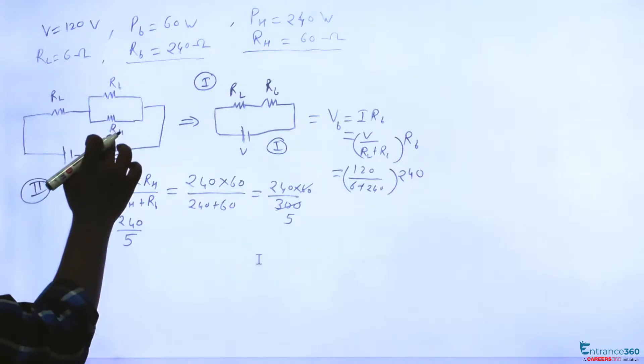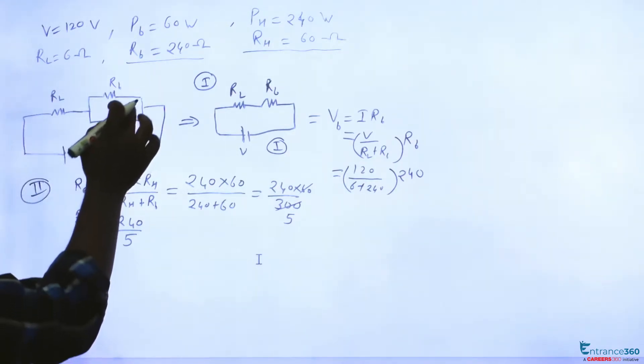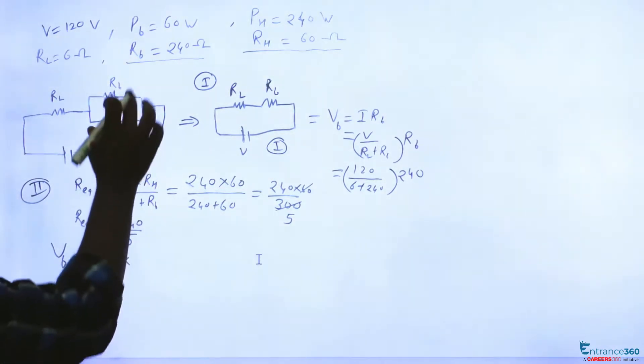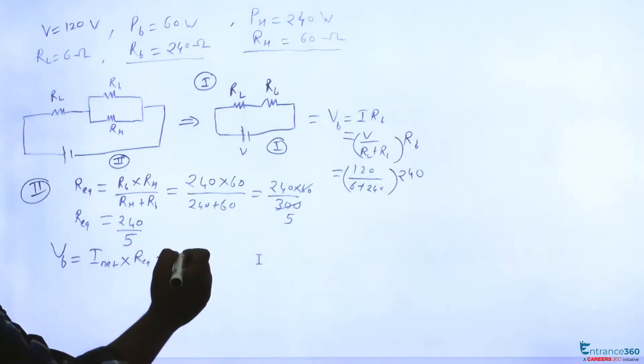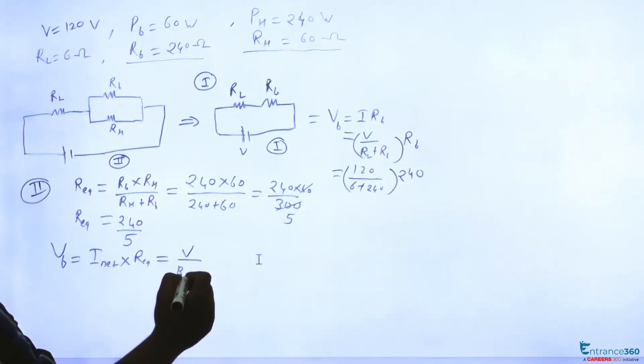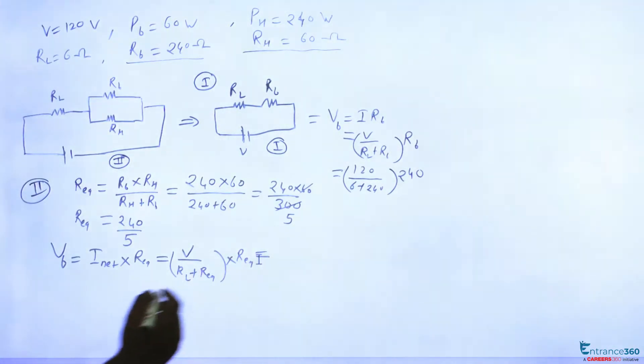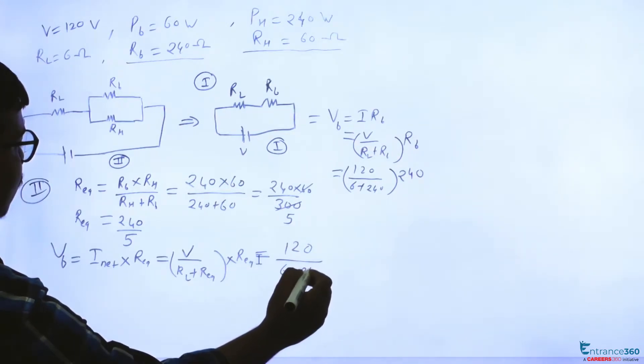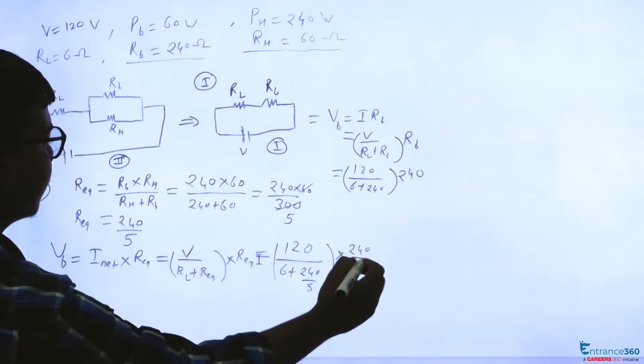Then we want to find out voltage drop across bulb. So voltage across bulb will be same as voltage across heater here, and voltage across this point is given as voltage across bulb. So we can write voltage across bulb simply I net into this R equivalent, or I net is given as V upon RL plus R equivalent into R equivalent. So just put the values here, we get 120 divided by 6 plus 240 by 5 into 240 by 5.